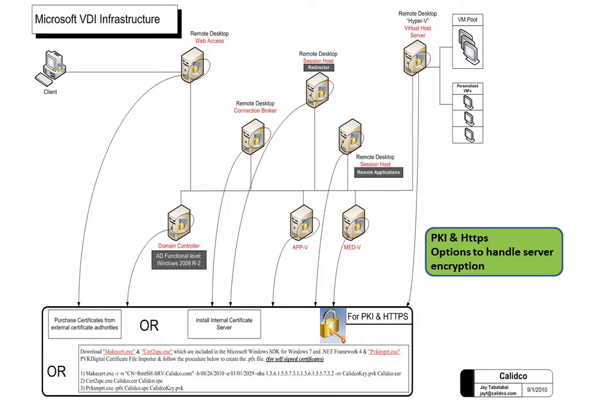As far as the PKI infrastructure and how these servers securely communicate with each other: certificates can be purchased from external certificate authorities such as VeriSign, or we could install a certificate server within the environment and create multiple public keys. Alternatively, we could download a set of tools — one of them is MakeCert, along with XCert and PVKIMPRT — that are included as part of the Microsoft Windows SDK for Windows 7 and .NET Framework.